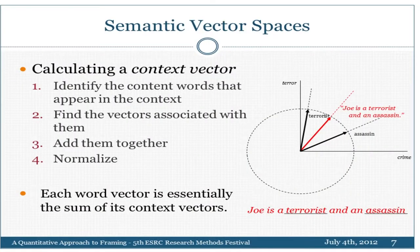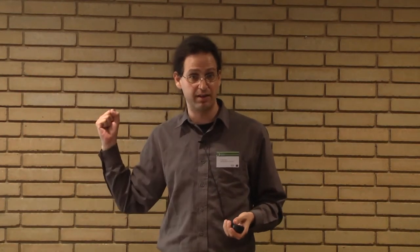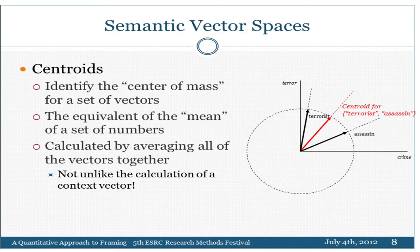Importantly for this method, you can combine vectors to create aggregate vectors. For example, for the sentence 'Joe is a terrorist and an assassin,' you find the content words — terrorist and assassin — locate them in the space, and do vector addition, which is basically concatenation. The resulting vector points in the direction of the aggregate. This is how we compute context vectors — a vector representing the context of a sentence or paragraph, essentially an average vector of everything in that context. Similarly, you can look at centroids, which are centers of mass of a set of vectors.